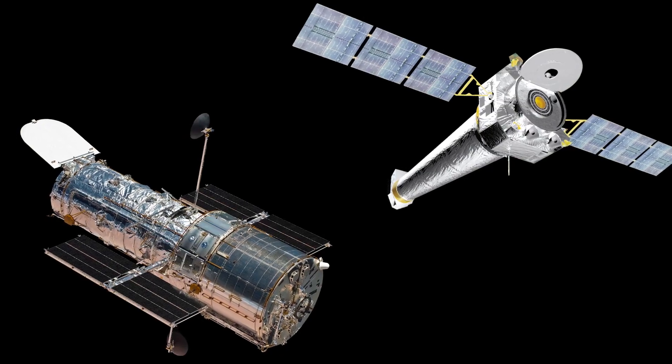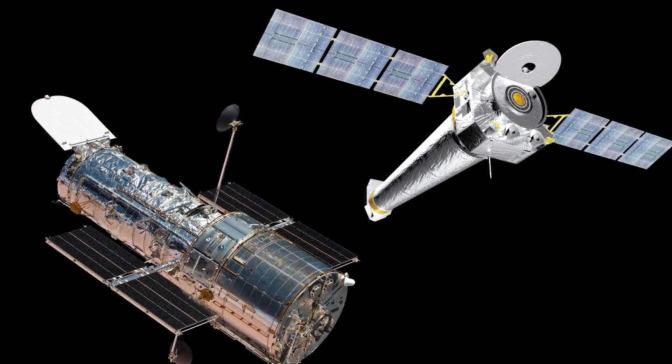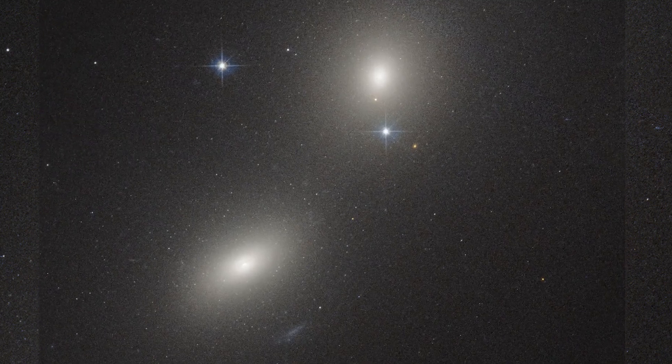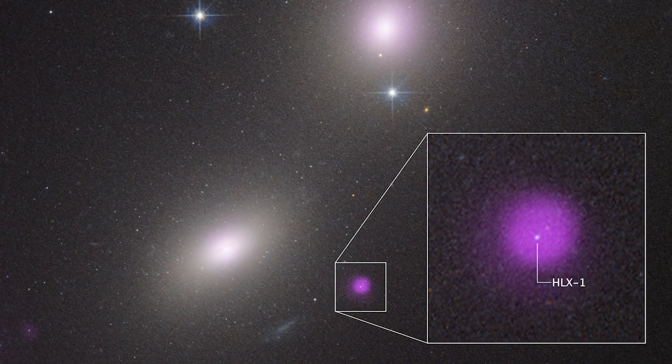Hubble and NASA's Chandra X-ray Observatory teamed up to study one of these rare events in a galaxy called NGC 6099, where a source known as HLX-1 lit up the sky.